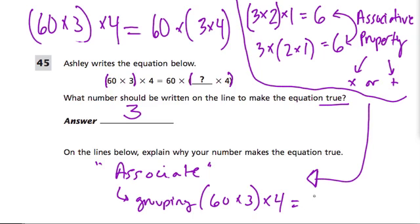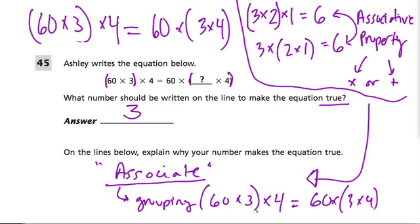Then they're associating with 4. But on the other side of the equation, first we're associating 3 times 4 — they're hanging out together first — then we're multiplying by 60. That might help you remember what's happening. Associate means hanging out. Parentheses tell you who's hanging out first. Changing the grouping, as long as you're just multiplying or just adding, won't change the answer.